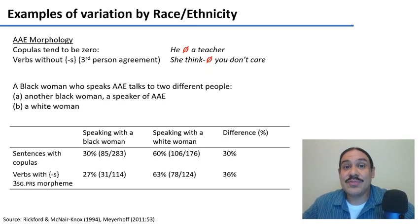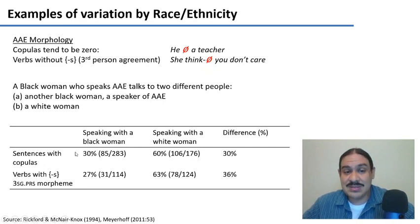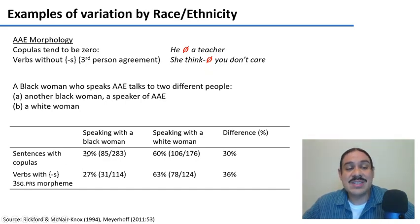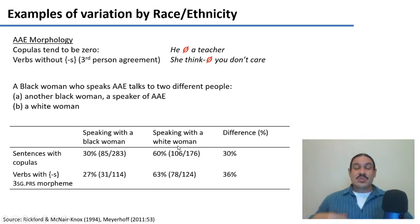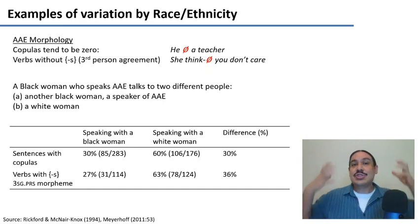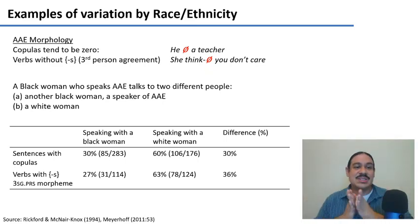This is a quantitative measurement of code-switching. She uses markers of African-American English more when speaking with another Black woman compared to when speaking with a white woman. Only 30% of her sentences have copulas when speaking with a Black woman, versus 60% with a white woman. Likewise, only 27% of her verbs have third-person agreement when speaking with a Black woman, and 63% when speaking with a white woman. So her race is a source of linguistic variation, but it doesn't completely determine how she speaks — she also accommodates to her interlocutor.